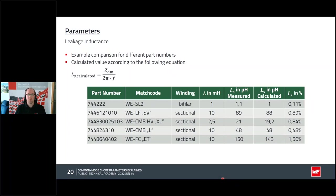For some parts, I have measured and additionally calculated the stray inductance, summarized in a table. For dataline chokes, and for four-arm mains chokes with sectional winding, we find ranges roughly 0.5% to 1.5% for the FC series. The SR2 series, which has a bifilar winding, has much smaller leakage inductance of only 0.1%. The stray inductance can be calculated from the differential mode impedance curve and the frequency, and I will show an example later.